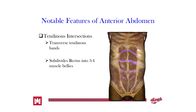We also have tendinous intersections between certain components of our rectus abdominis — these are transverse tendinous bands that subdivide the rectus into three or four muscle bellies. This is the quintessential six-pack visible on someone with very low body fat, where we can see those tendinous intersections going transversely across the rectus.